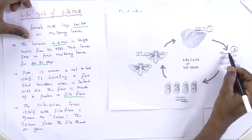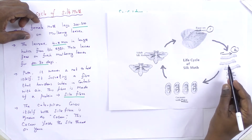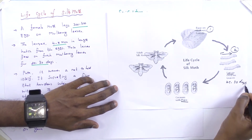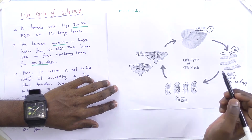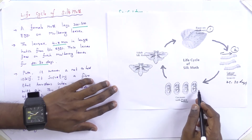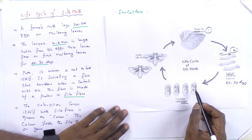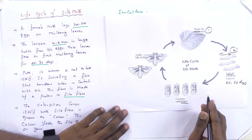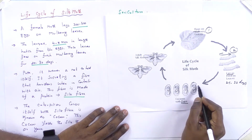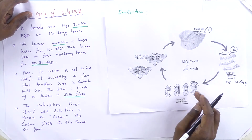In the larva stage, larvae are 4 to 5 mm in length, hatched from the eggs. These larvae are continuously fed mulberry leaves for around 25 to 30 days, then convert into the pupa stage. Here, the larva secretes a fiber that hardens when it contacts atmospheric air. This fiber is made of protein and is called silk fiber. The moth covers itself with silk fiber, forming what is known as a cocoon.